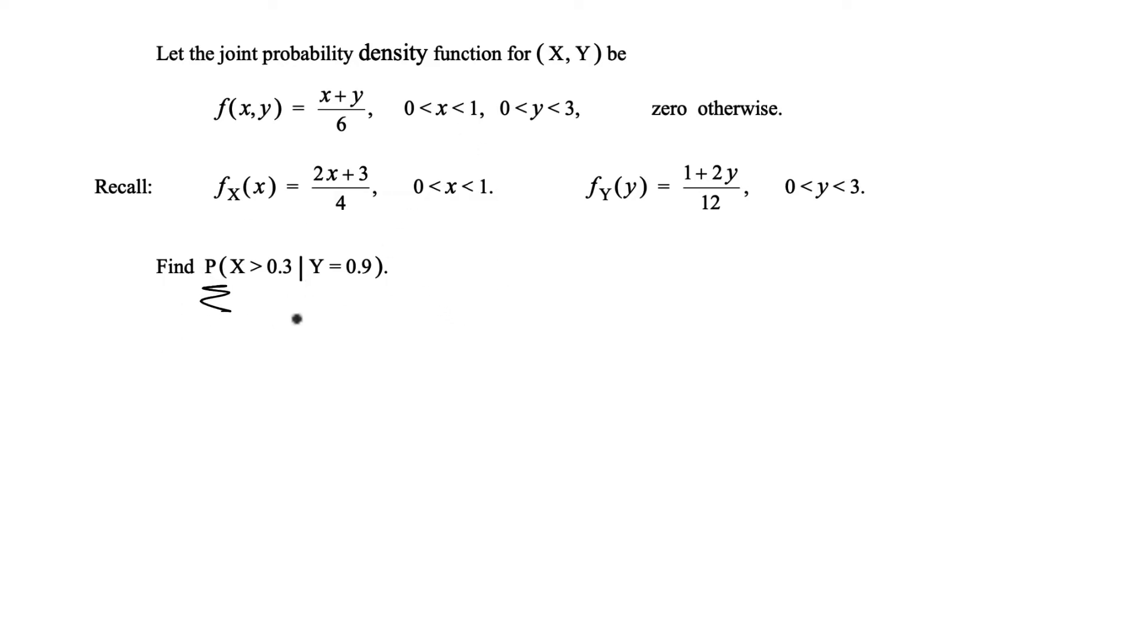To find a probability from a density function when you have continuous random variables x and y, we're going to integrate from the pdf. Now we have to find first the conditional pdf to be able to integrate to find the probability.